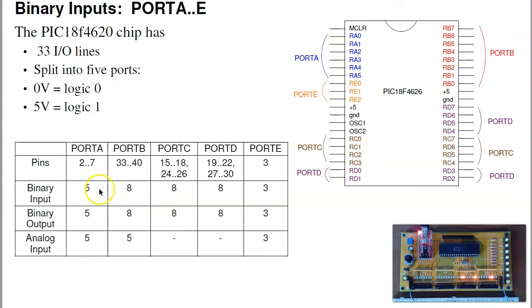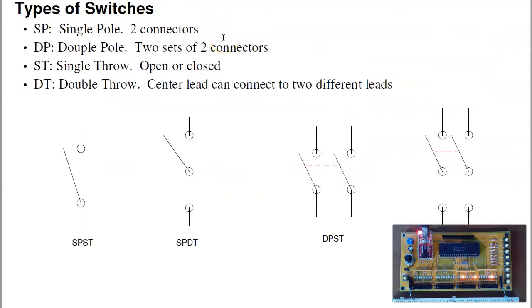Now each of the ports can be either binary or analog, input or output. We're going to start out with everything binary. So for binary inputs, zero volts is logic zero, five volts is logic one.